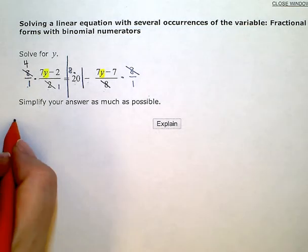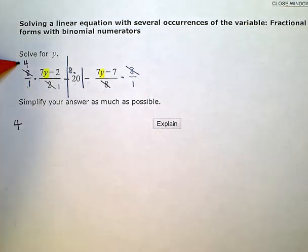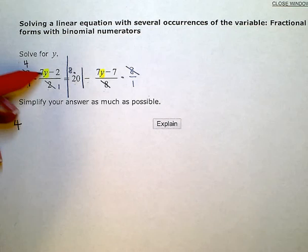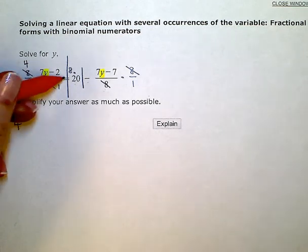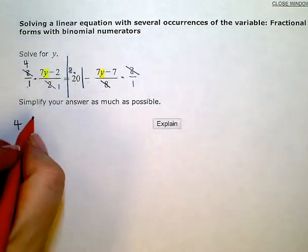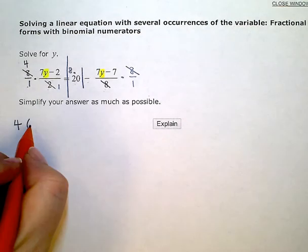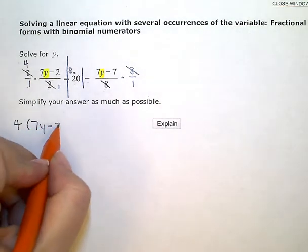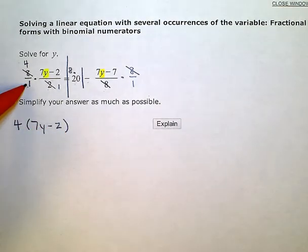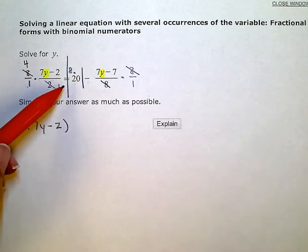If I rewrite this simplified, I'm left with 4, and I have to multiply by this entire numerator, times 7y minus 2. And on the bottom, in the denominator, I just have 1 times 1. I can leave that off now.